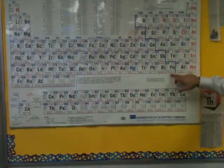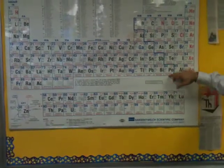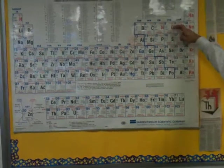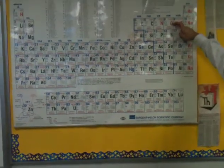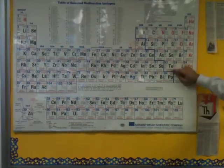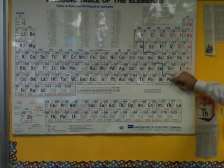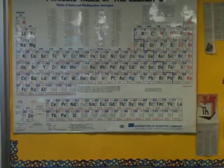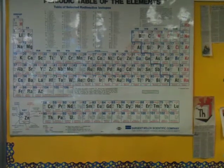Group 16 has six valence electrons. The way you memorize them is to say the word O-S-Se-Te-Po: oxygen, sulfur, selenium, tellurium, polonium.